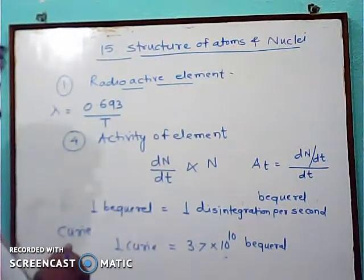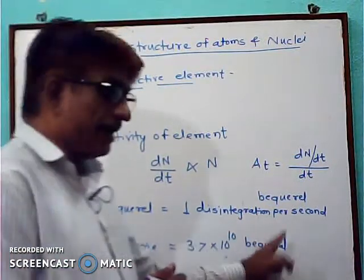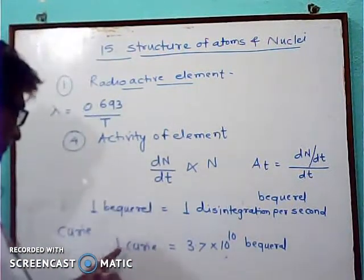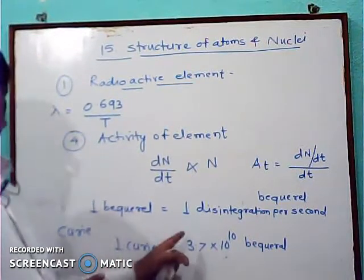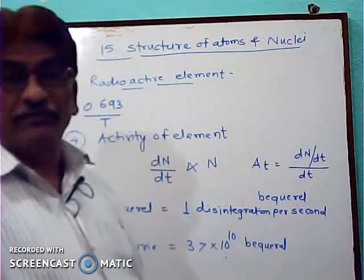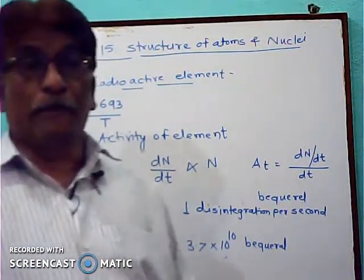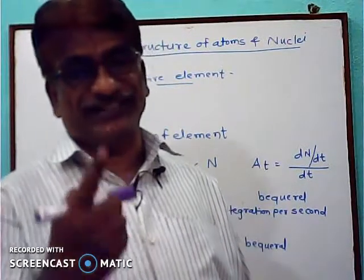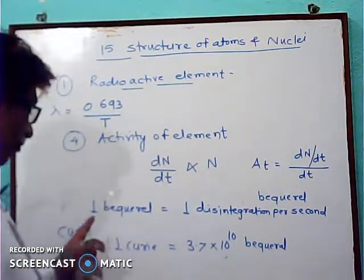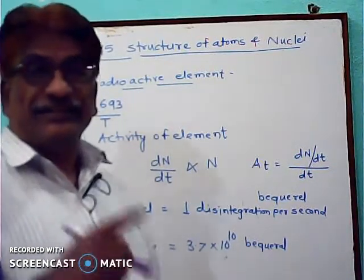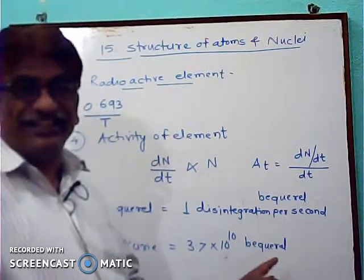We can also use sub-units. One Millicurie is equal to 3.7 × 10⁷ Becquerel (disintegrations per second). Millicurie means 10⁻³ Curie and Microcurie means 10⁻⁶ Curie. Therefore, one Microcurie is equal to 3.7 × 10⁴ disintegrations per second.